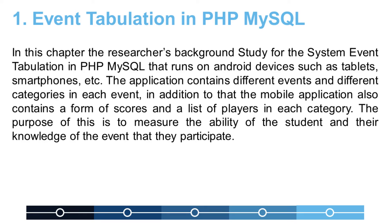In this chapter, the researcher's background study covers the Event Tabulation System in PHP MySQL that runs on Android devices such as tablets, smartphones, etc. The application contains different events and different categories in each event. In addition, the mobile application also contains a form of scores and a list of players in each category. The purpose of this is to measure the ability of the student and their knowledge of the event that they participate in.